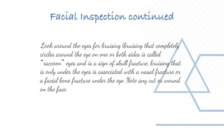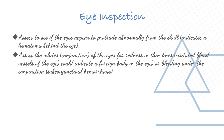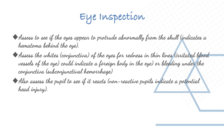For eye inspection, assess whether the eyes appear to protrude abnormally from the skull, which indicates a hematoma behind the eye. Assess the conjunctiva — the whites of the eye — for redness or thin line blood vessels, which could indicate a foreign body or subconjunctival hemorrhage. Also assess the pupils to see if they react: non-reactive pupils indicate a potential head injury.